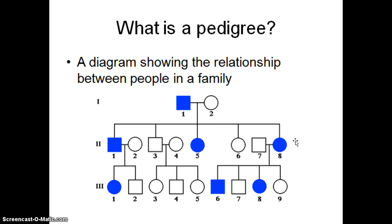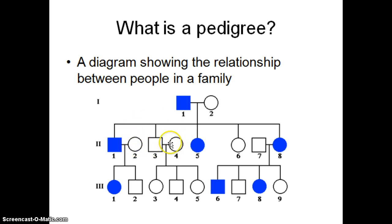Let's do one more. Generation one, number one and number two — how many daughter-in-laws do they have? Pause the program and see what you can come up with. They have one daughter-in-law here and one daughter-in-law here, so they have two daughter-in-laws. So there are a lot of things we can ask with pedigrees — it's just a nice pictorial instead of dealing with a lot of text and words in a document.